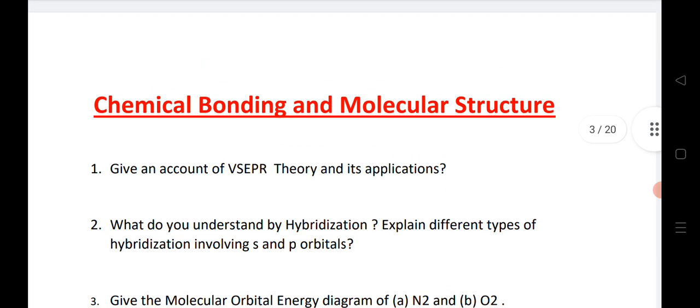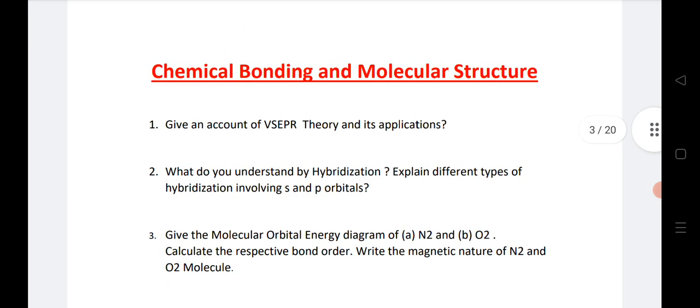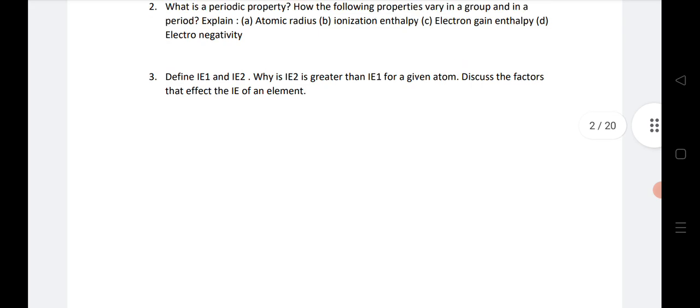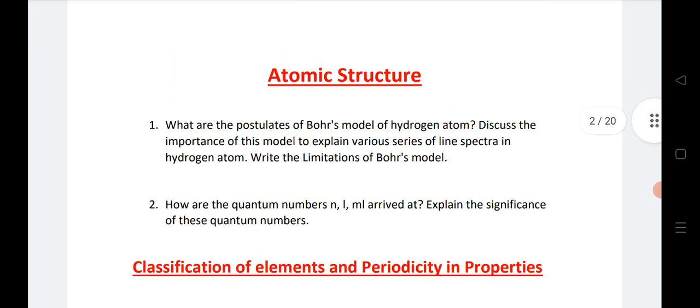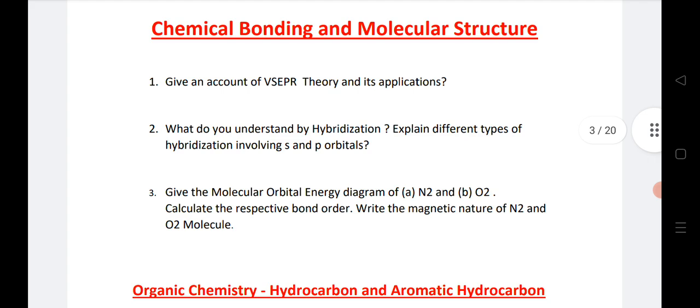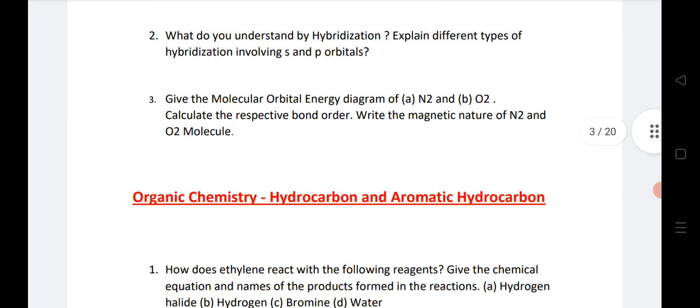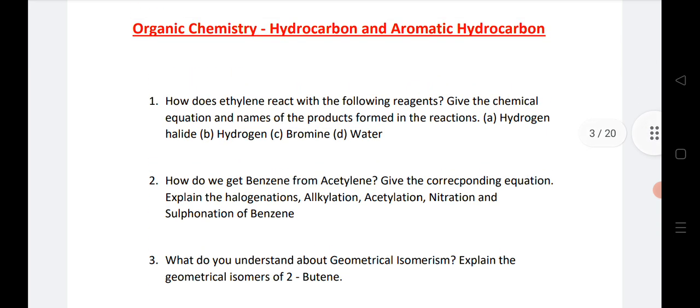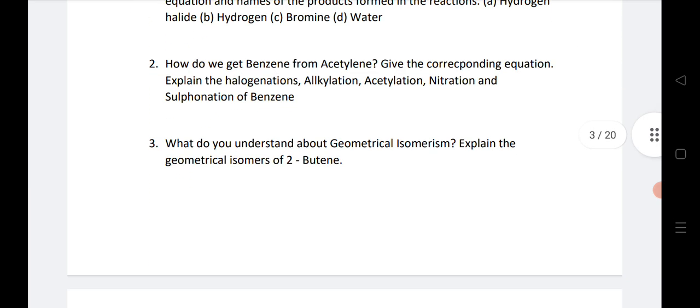Next is chemical bonding. Three LAQs we have given. If you want to do chemical bonding that is your choice, but if you are doing these two chapters—classification of elements and atomic structure—they definitely give you 16 marks. If you are good in chemical bonding you can go for chemical bonding as well as organic chemistry. We have given three LAQs you can practice if you want, or otherwise you can go with atomic structure and classification of elements.